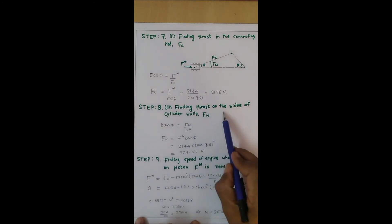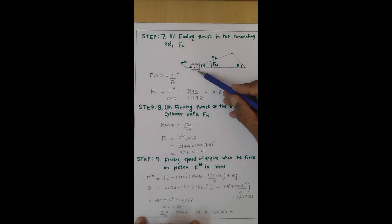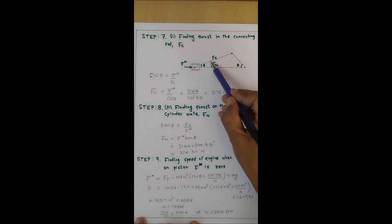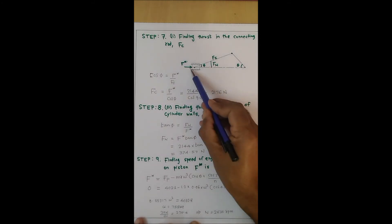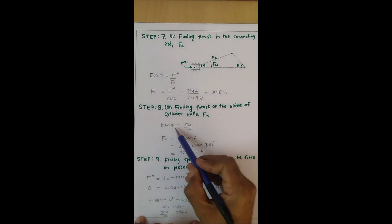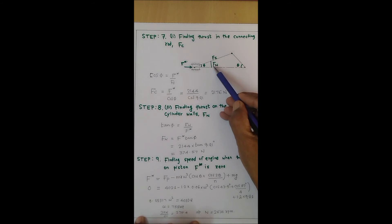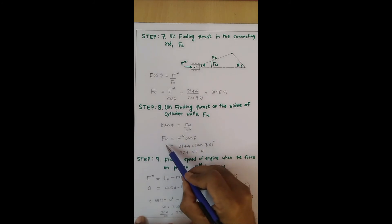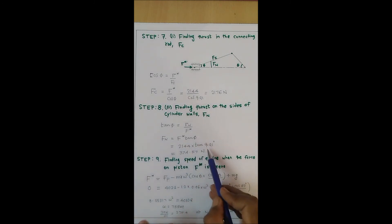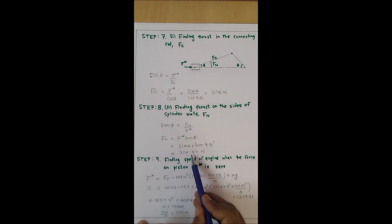Step 8 is finding the thrust on the sides of the cylinder walls, which is the normal reaction Fn. Using the same right-angle triangle: tan φ = opposite/adjacent = Fn / F*. Therefore Fn = F* × tan φ. With F* = 2144 N and phi = 9.91°, the result is Fn = 374.57 N. So 374.57 N of normal force acts on the cylinder walls.